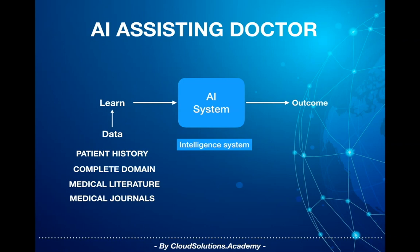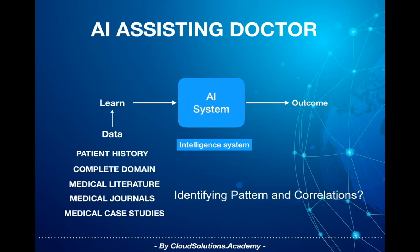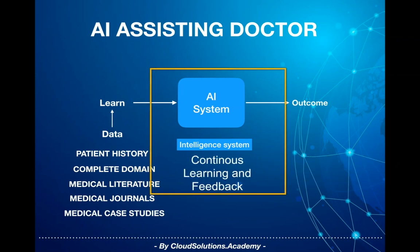Understanding the complete cancer domain is a very complex process where one needs to train the system to understand the medical terminology and the vast ever-growing cancer literature, identifying patterns and correlations from existing patients, their suggestive treatments and outcomes, and finally suggest options for treatment. This is a continuous process where systems would be trained from the feedback and their outcomes.